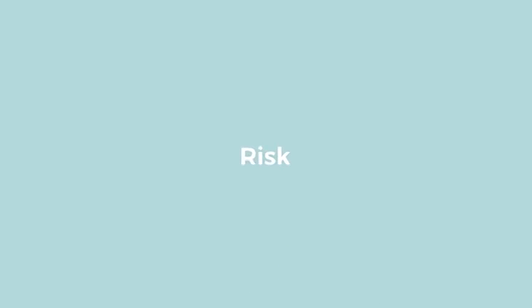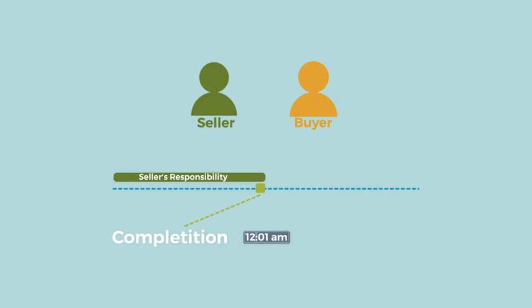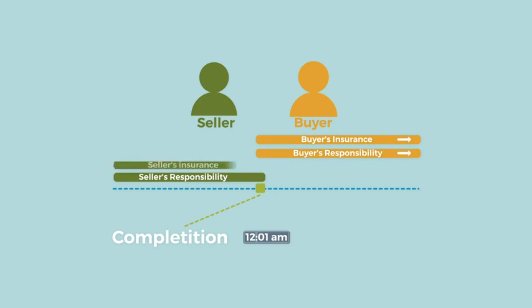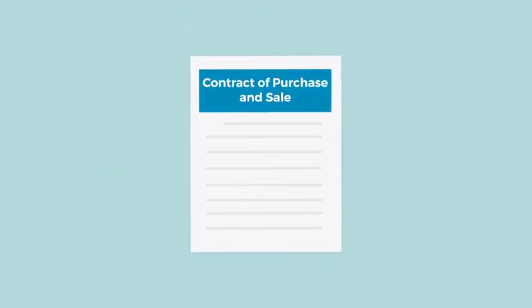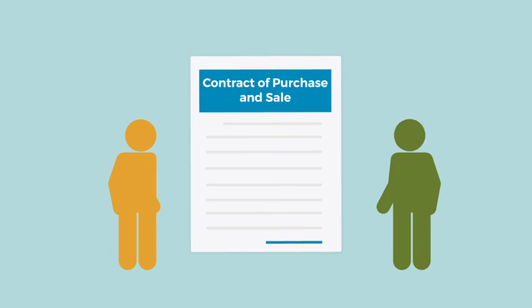Risk: This section provides that the seller remains responsible for all risks relating to the property and all items included in the purchase and sale until 12:01 am on the completion date. The buyer should ensure they have property insurance from and after that time. The seller may also want to consider insuring the property through to possession. Restriction on Assignment: The Contract of Purchase and Sale provides that the contract cannot be assigned without the written consent of the seller, and that any profit from an assignment will be for the benefit of the seller unless otherwise agreed.